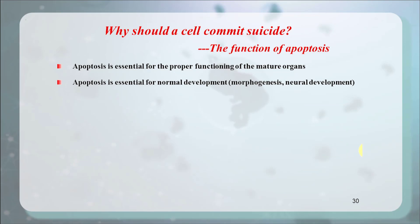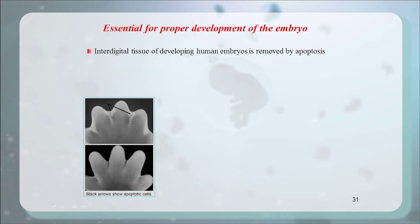Second, apoptosis is essential for normal development, such as morphogenesis or neuronal development. During the formation of hands or feet, interdigital tissue of developing human embryos must be removed by apoptosis. As a result, fingers or toes are free. Otherwise, webbed fingers will form.